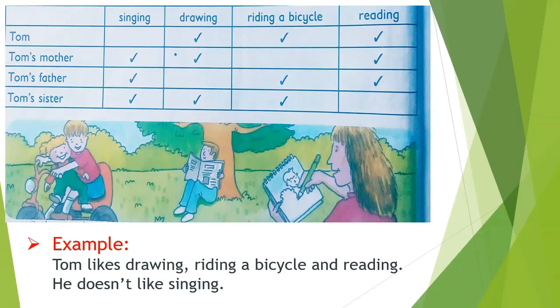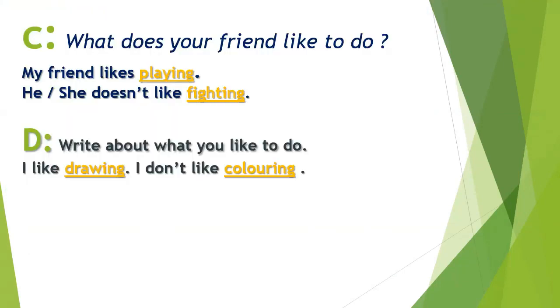Now move on to Exercise D: Write about what you like to do. For example: 'I like drawing. I don't like coloring.' You write about what you like to do — write about yourself.